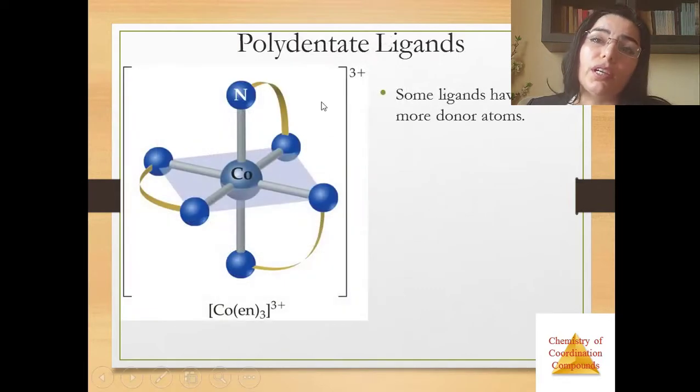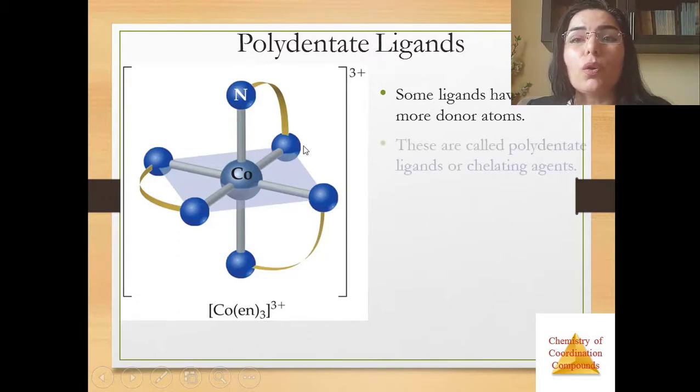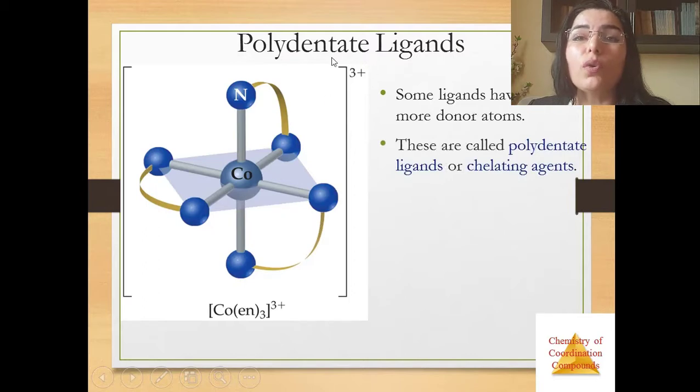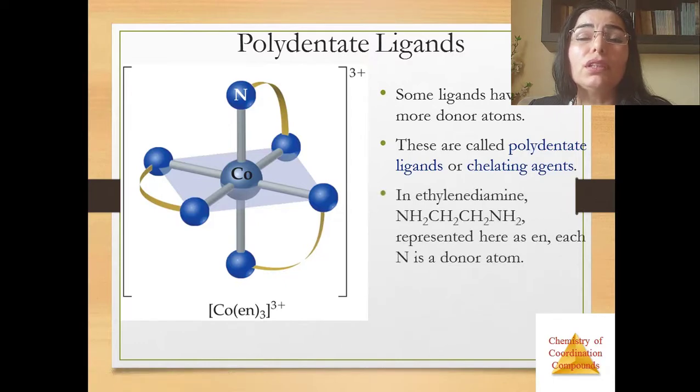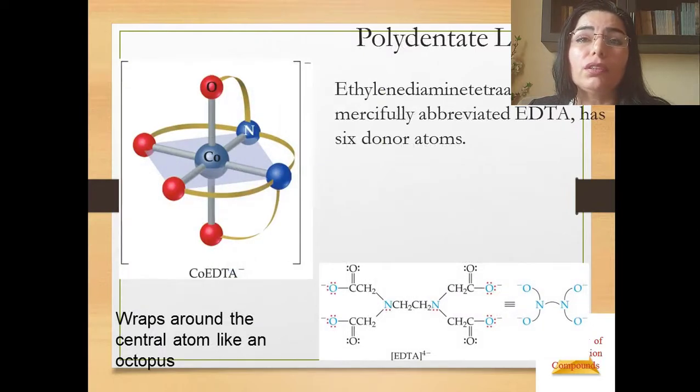Now about polydentate ligands. Some ligands have two or more donor atoms and these are called polydentate ligands or chelating agents. Some ligands like ethylenediamine represented here as EN, each nitrogen is a donor atom. Therefore EN is bidentate. Ethylenediamine tetraacetate, mercifully abbreviated EDTA, has six donor atoms and wraps around the central atom like an octopus.